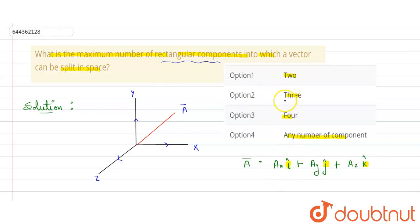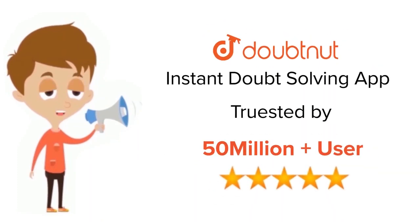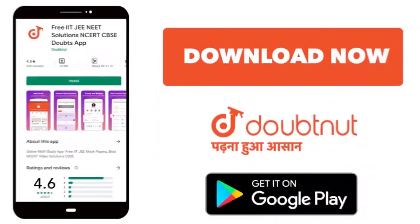So option two is correct. Thank you. For class six to twelfth, IIT-JEE and NEET level, trusted by more than five crore students, download Doubtnet app today.